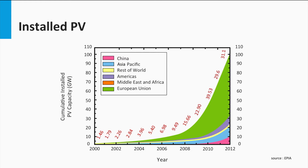The next graph shows the worldwide cumulative installed PV power, which is exponentially increasing in time as well. The different colors reflect the different regions in the world. The green area corresponds to Europe, which shows that the far majority of PV systems are installed in Europe.